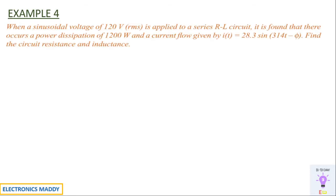Example four: a sinusoidal RMS voltage of 120 V is applied to a series RL circuit. There is a power dissipation of 1200 W and the current is given by i(t) = 28.3 sin(314t − 5°). Find the circuit resistance and inductance. Write the given data: V = 120 V, P = 1200 W, and the current equation.